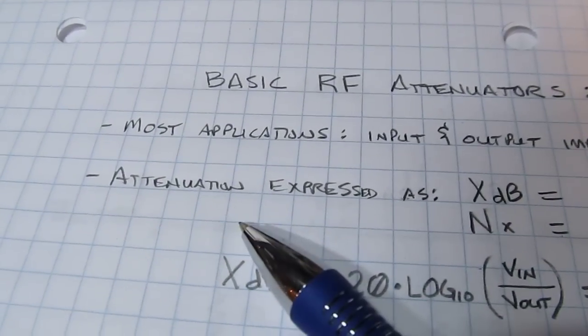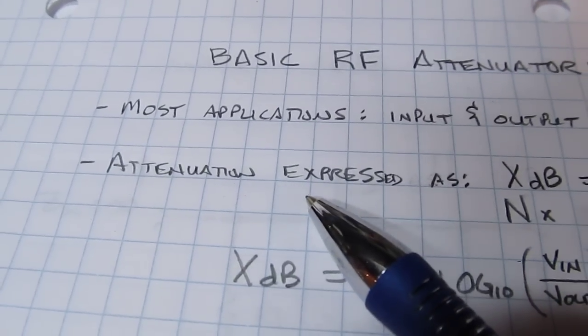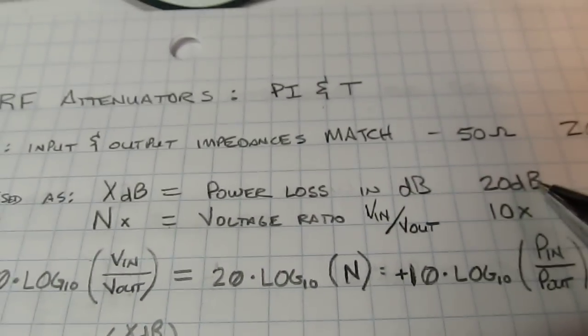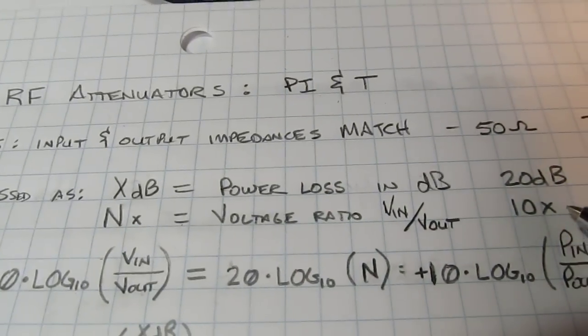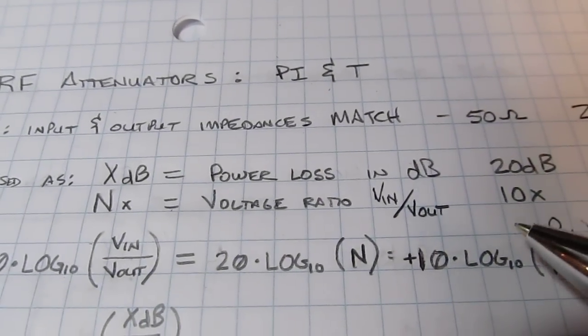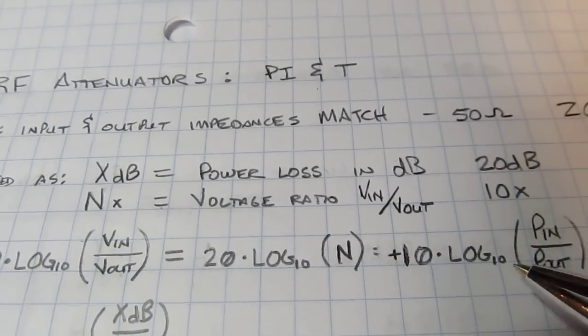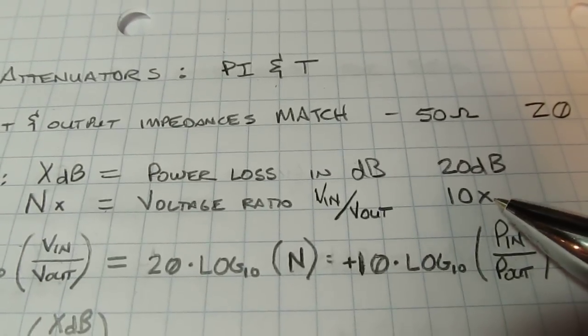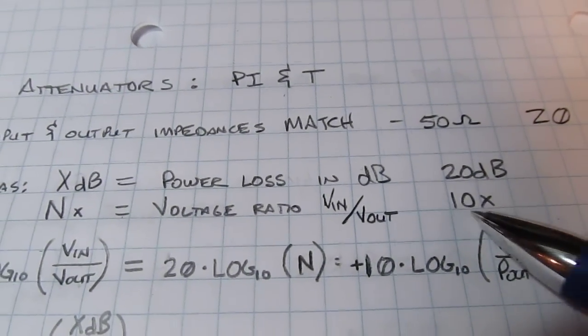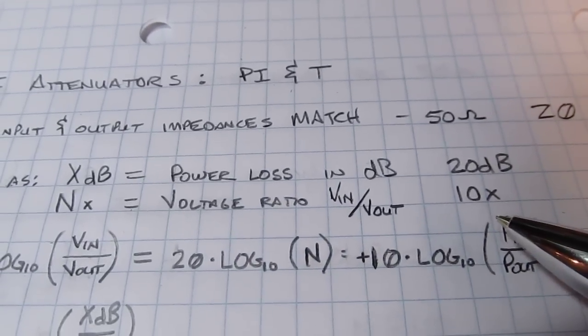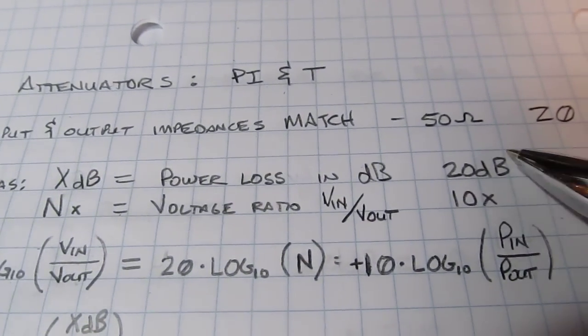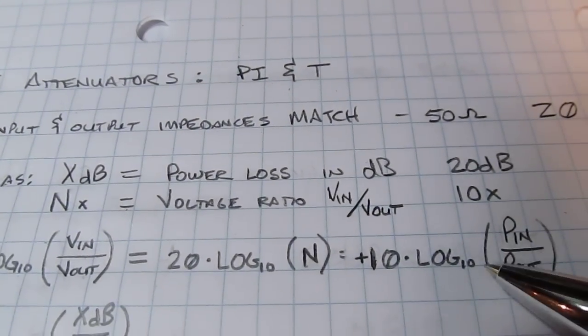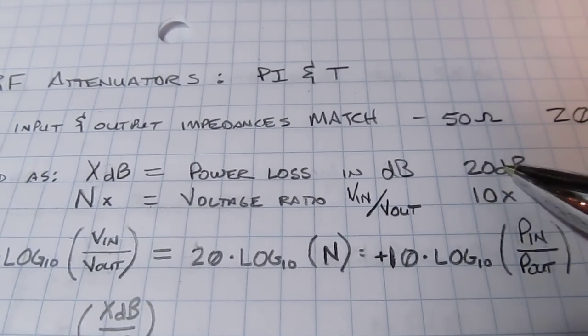Typically when you talk about attenuators, their value is usually expressed in either their loss, like a 20 dB attenuator, or sometimes by their voltage ratio, like a 10x attenuator. You most often see that in oscilloscope probes. A 10x attenuator will attenuate the voltage by 10x, and 20 dB are the same thing - a 10x change in voltage is a 20 dB change in voltage, also a 20 dB change in power.